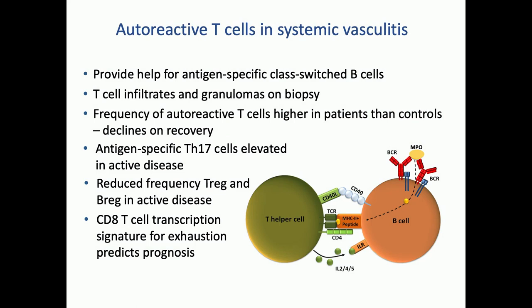We mustn't forget the T-cell, which is required to help the antigen-specific class-switched B-cells. There are T-cell infiltrates and granulomas — a Th1-type thing on biopsy. We were among the first to describe autoreactive T-cells in vasculitis: higher in patients than controls, their frequency declines on recovery. Working with Alan Salama and Ruth Pepper, we showed that Th17 cells are primarily activated in active disease. We also showed there's a reduced frequency of regulatory cells — Tregs and Bregs — allowing unrestricted activation of effector cells. And Ken Smith's group found a CD8 T-cell transcription factor for T-cell exhaustion that is strongly predictive of whether the patient will relapse.